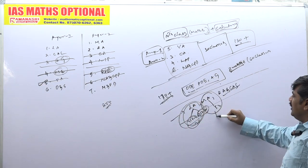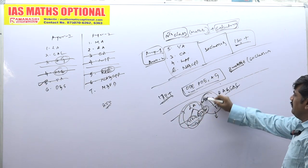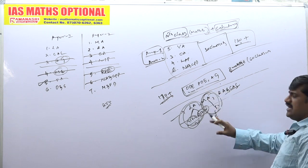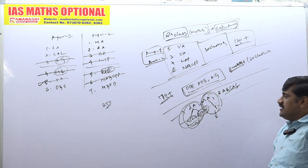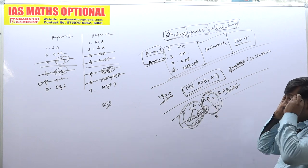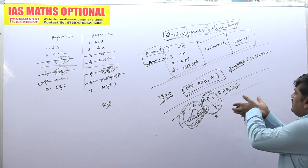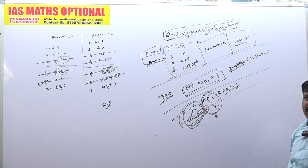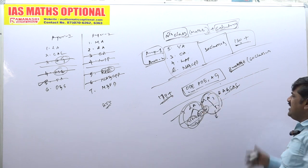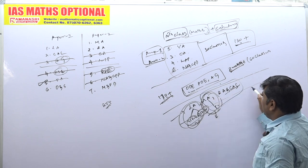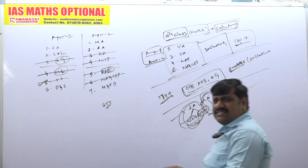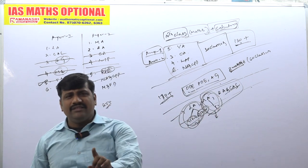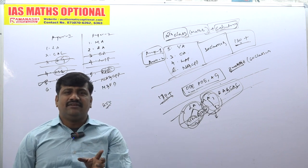Modern algebra — people are feeling it is very tough, but it is very, very easy. If you know modern algebra, it won't require any calculations. You simply need to open your mind to understand the simple concepts. Very easy. Real analysis and calculus — this calculus is very, very dead easy. The only thing you need is to understand the logic.